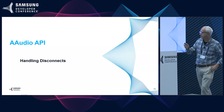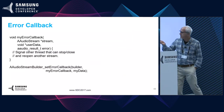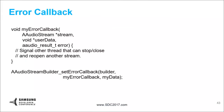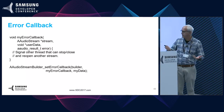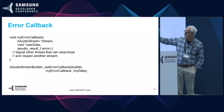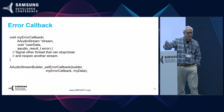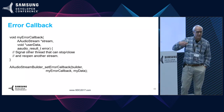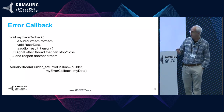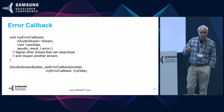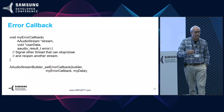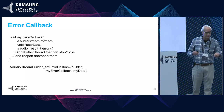One important thing: A-Audio doesn't handle device disconnect. So if you unplug headphones, you need to close the old stream and start a new one. When you get the error callback, you have to do that in another thread — you have to start or signal another thread to handle the disconnect. It's a little more work, but it gives you flexibility to decide what happens when the user plugs in headphones.